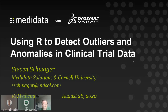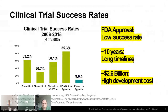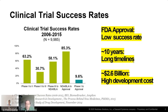Thanks to everyone for joining. I'm going to talk about using R to take a big bite out of a very old problem — one I would have thought we'd have made more progress on by now. Outliers and data anomalies are still very much with us in the clinical trials world. This is why we need to solve this problem: the success rate of clinical trials starting from phase one through approval is under 10%.